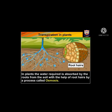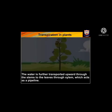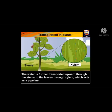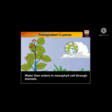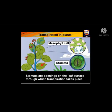In plants, the water required is absorbed by the roots from the soil with the help of root hairs by a process called osmosis. The water is further transported upward through the stems to the leaves through xylem tissues, which act as a pipeline. Xylem cells have thick walls. Water then enters the mesophyll cells through stomata.